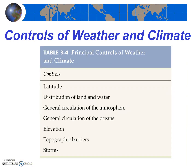Next, there are seven controls of weather and climate. The controls of weather and climate are the factors that can strongly impact and thus control the elements of weather and climate. Each of the controls shown here strongly impacts one or more of the four elements. For example, latitude is the strongest control of temperature.